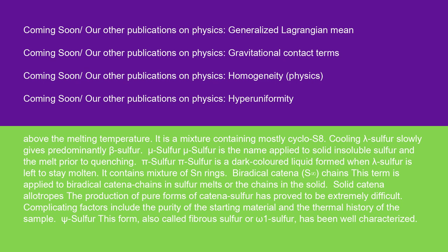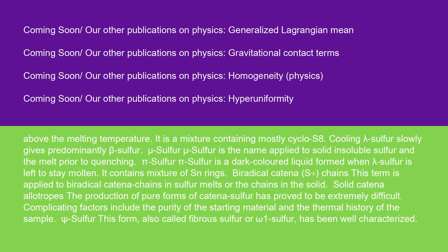The production of pure forms of catena-sulfur has proved to be extremely difficult. Complicating factors include the purity of the starting material and the thermal history of the sample. Psi-sulfur, also called fibrous sulfur or omega-1 sulfur, has been well characterized. It has a density of 2.01 g cm⁻³ (cf. alpha-sulfur 2.069 g cm⁻³) and decomposes around its melting point of 104°C. It consists of parallel helical sulfur chains with both left- and right-handed twists in a radius of 95 pm. The S-S bond length is 206.6 pm, the SSS bond angle is 106°, and the dihedral angle is 85.3°. Comparable figures for alpha-sulfur are 203.7 pm, 107.8°, and 98.3°.